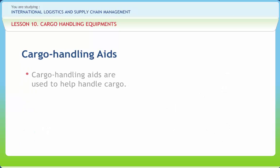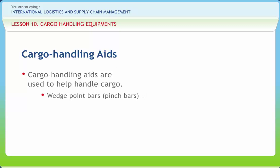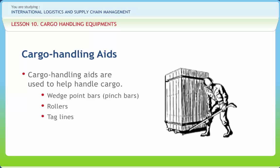Cargo handling aids are used to help handle cargo. These include items such as wedge point bars or pinch bars, rollers and taglines. Wedge point bars have a wedge-shaped working end for prying. They are used to shift heavy cases into position over short distances with a grease-like substance called skid compound. For longer distances, cargo handlers use the wedge point bar to pry the case up high enough to get rollers under it. Personnel use rollers to move cargo from wings and ends of a hatch to the square of the hatch. Pallet-type truck dollies or pallet dollies consist of a steel frame and eight-bar rollers.